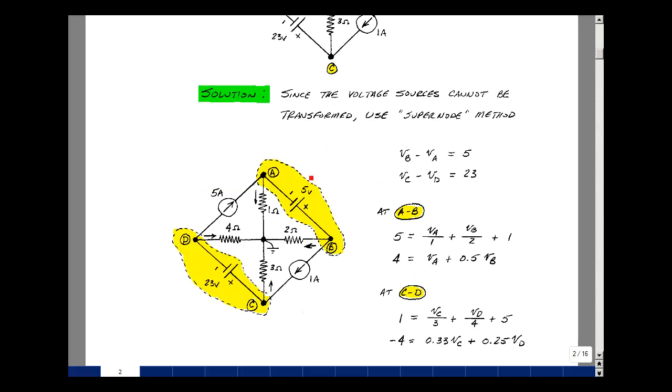You can think of nodes A and B as one supernode, and nodes C and D as one supernode. What we've got here is a voltage between these two nodes, so V sub B minus V sub A would be 5, and V sub C minus V sub D would be 23.